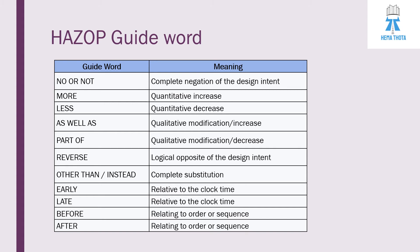These are the HAZOP guide words. 'No' or 'Not' means complete negation of the design intent. 'More' means quantitative increase. 'Less' means quantitative decrease. 'As well as' means quantitative modification or increase. 'Part of' means quantitative modification or decrease. 'Reverse' means the logical opposite of the design intent. 'Other than' or 'Instead' means complete substitution. 'Early' and 'Late' are relative to clock time. 'Before' and 'After' are related to order or sequence.